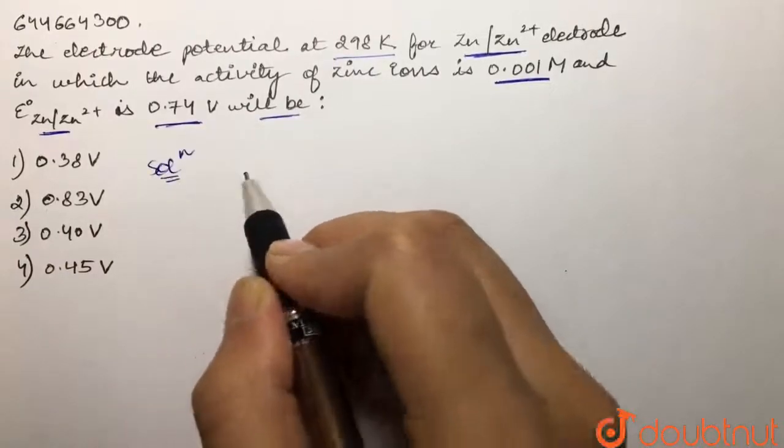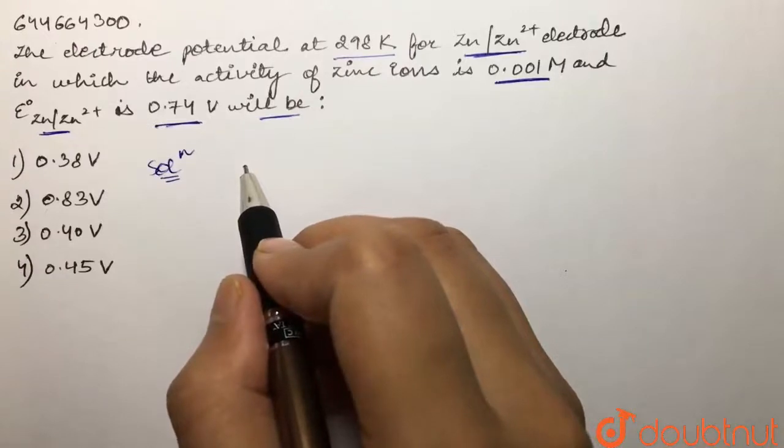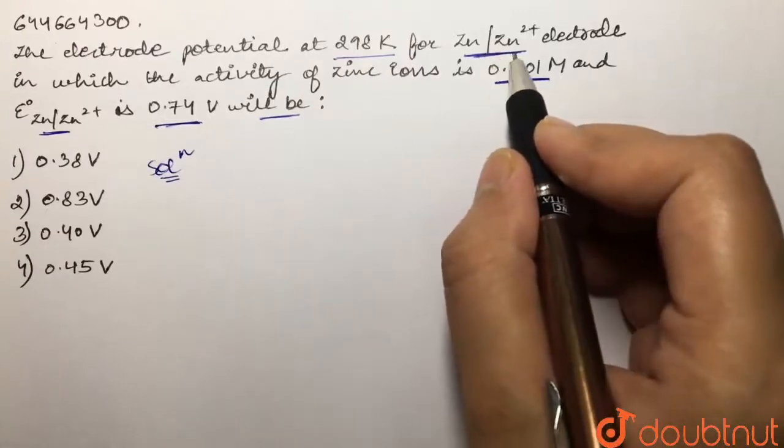Over here we are supposed to give the E of cell, right? And our cell given to us is this zinc to zinc two plus.